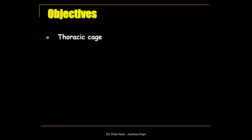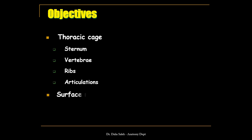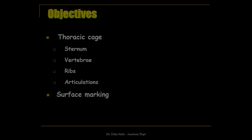I'm going to discuss the anatomy of the thoracic cage and the bones forming it: the sternum, the vertebrae, the ribs, the articulations between these bones, and the surface marking or surface anatomy of the thoracic cage.